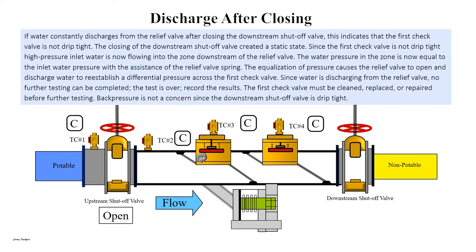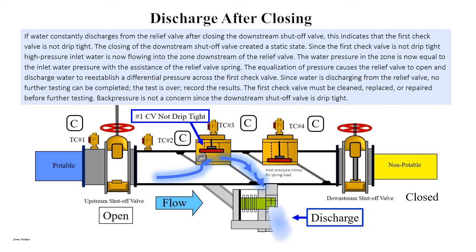Discharge after closing. If water constantly discharges from the relief valve after closing the downstream shutoff valve, this indicates that the first check valve is not drip tight. The closing of the downstream shutoff valve created a static state. Since the first check valve is not drip tight, high pressure inlet water is now flowing into the zone downstream of the relief valve. The water pressure in the zone is now equal to the inlet water pressure with the assistance of the relief valve spring. The equalization of pressure causes the relief valve to open and discharge water to re-establish a differential pressure across the first check valve. Since water is discharging from the relief valve, no further testing can be completed. The test is over.